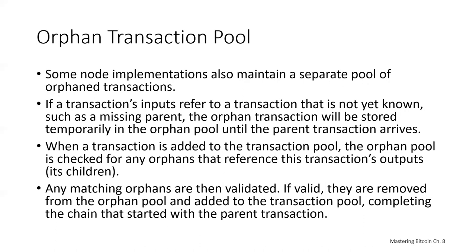In light of the newly added transaction, which is no longer an orphan, the process is repeated recursively looking for any further descendants until no more descendants are found. Through this process, the arrival of a parent transaction triggers a cascade reconstruction of an entire chain of independent transactions by reuniting the orphans with their parents all the way down the chain.